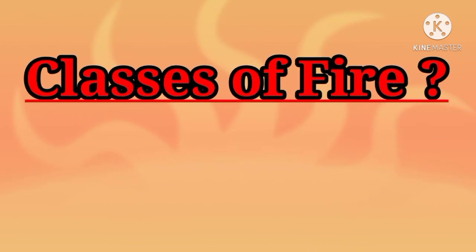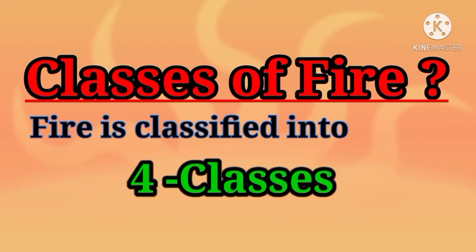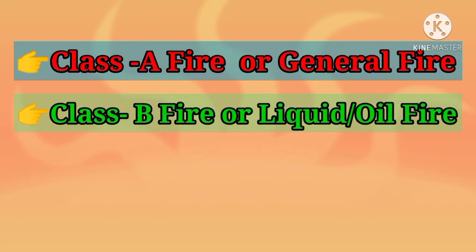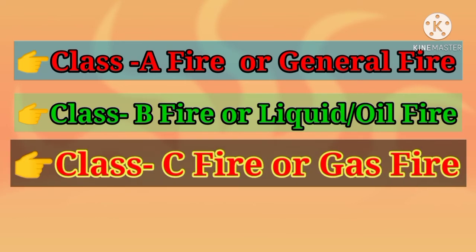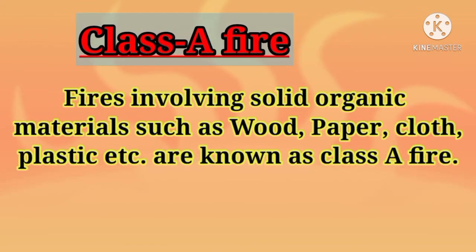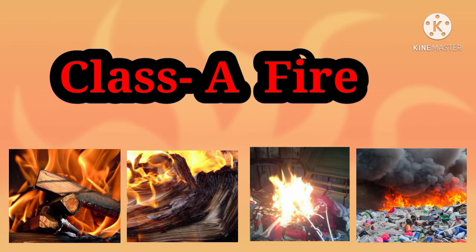Now let's see the classes of fire. Fire can be classified into four classes according to its combustible materials or fuel. These are Class A fire or general fire, Class B fire or liquid fire, Class C fire or gas fire, and Class D fire or metal fire. Fires involving solid organic materials such as wood, paper, cloth or textiles, and plastics are known as Class A fire or general fire.